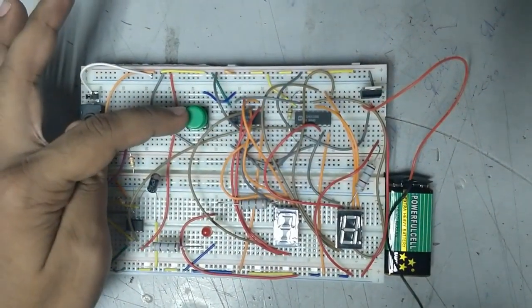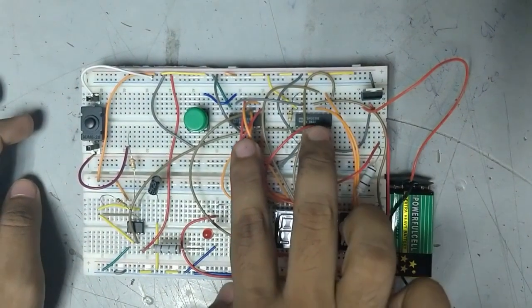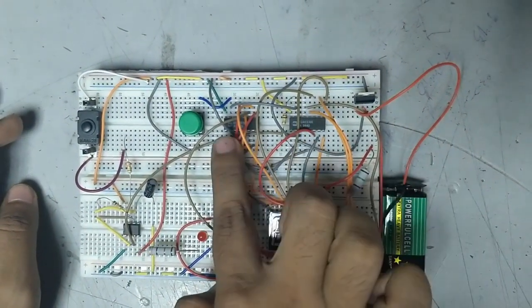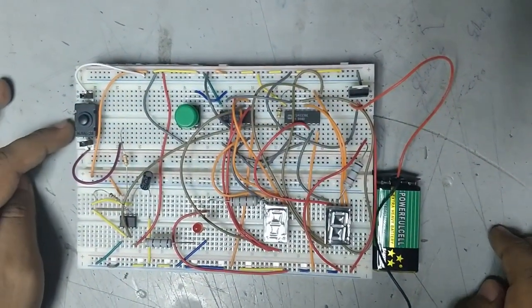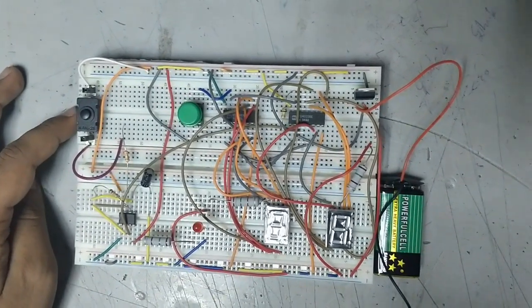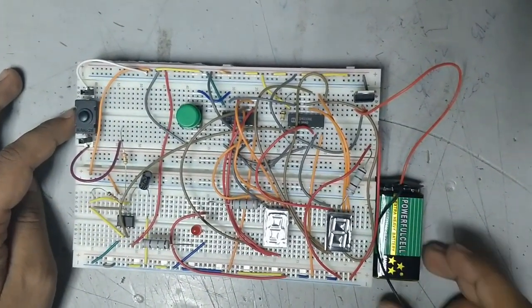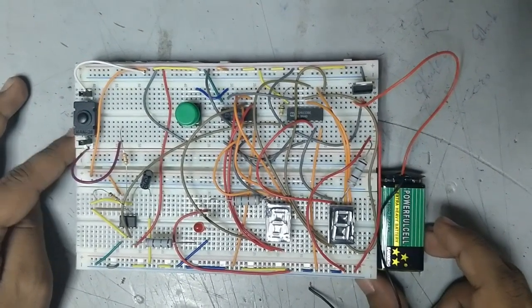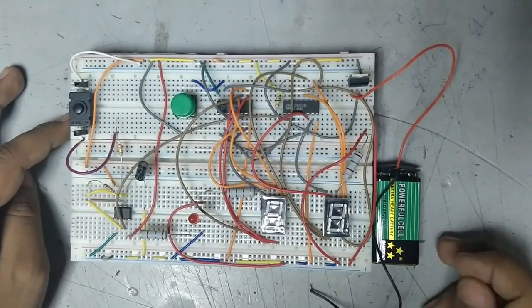And these are the two counter ICs 4033. This is a counter and seven segment decoding in one package IC, which is very easy to interface with seven segment displays. It is ideal for low power displays.